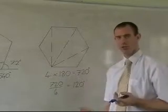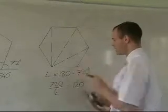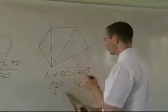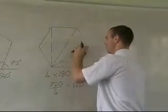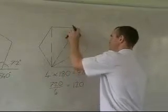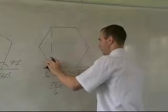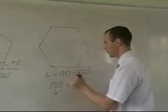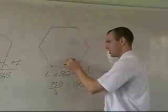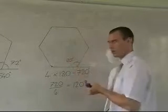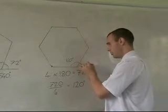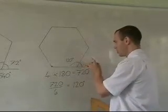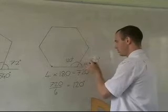If we were then to continue and work out what the external angle is. Again, we draw a little line in to show the external angle. Rub the rest of these lines out to avoid any confusion. So we know this angle here is 120 degrees. So the angle here, which may be labelled y, would be 180 take away 120, which is 60 degrees.